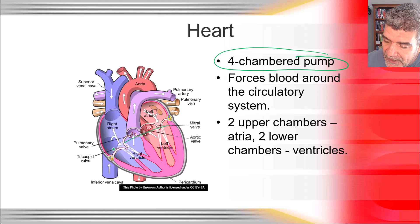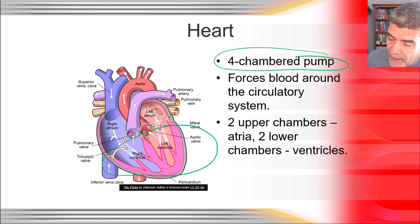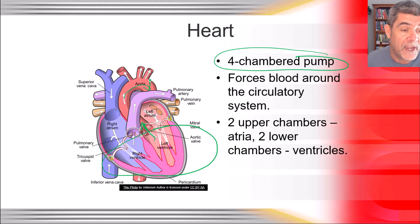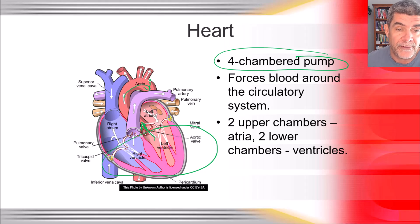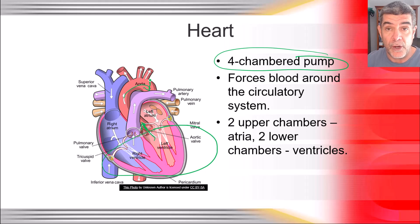The two ventricles are the pumping chambers, and when you look at a dissection of a heart, you find very thick muscular walls, especially in the left ventricle, because that's the one that pumps blood through the aorta and out to all areas of the body, particularly the head. The blood has to be pumped up against gravity, so there's a significant amount of force that needs to be applied by those thick muscular walls.